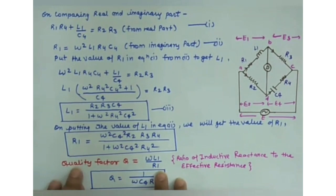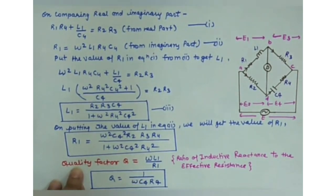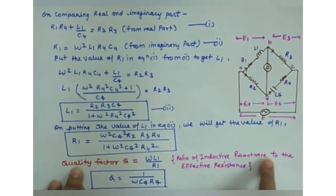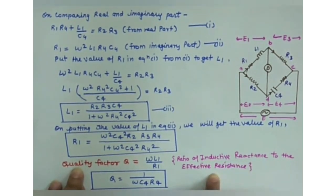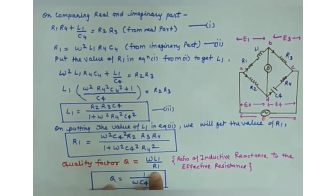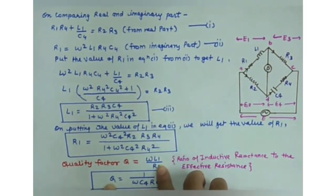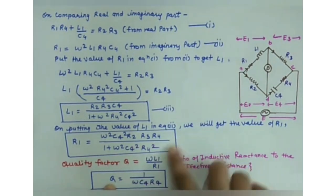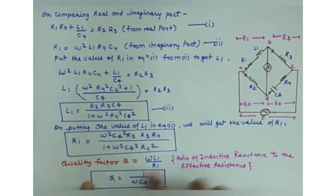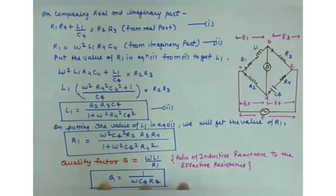To determine the quality factor, by definition it is the ratio of inductive reactance to effective resistance: Q = ωL1/R1. Substituting the values of L1 from equation 3 and R1, we get the quality factor Q = 1/(ωC4·R4). This concludes the discussion on Hay's Bridge.